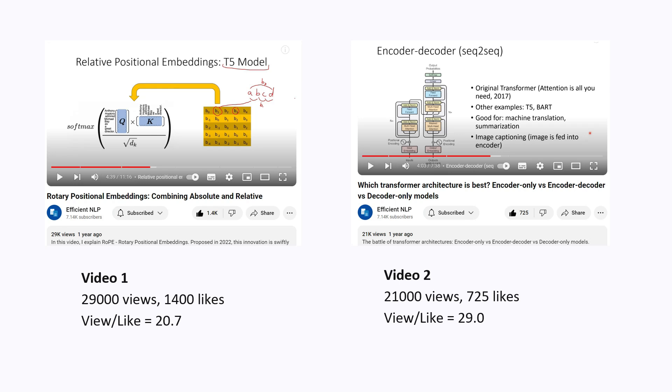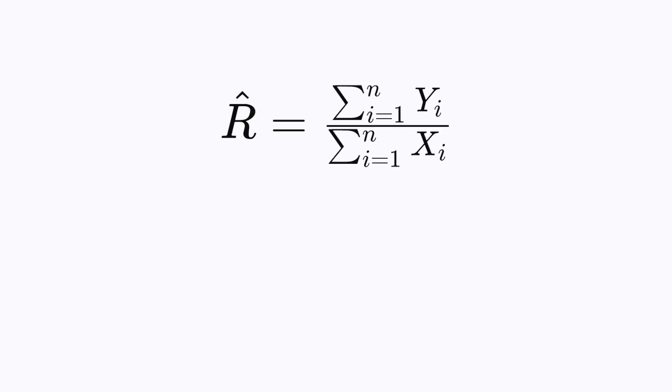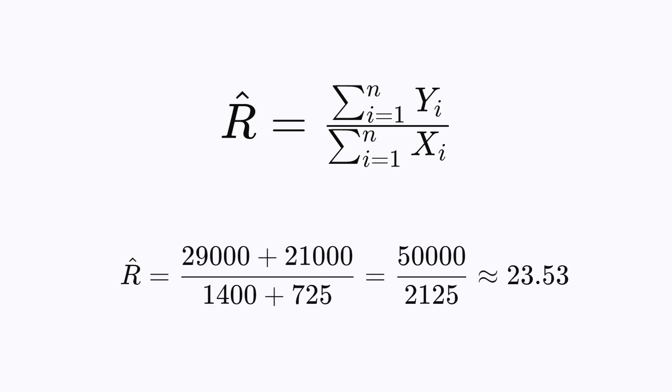I would like to know the view-to-like ratio across my whole channel, but it's time-consuming because I have to go into each video to know how many views and likes I have. Instead of doing all this manual work, I'm going to use a ratio estimator to get an approximation of my view-to-like ratio across my whole channel. In this case, from the two of my videos that I sampled, I can approximate the view-to-like ratio in my channel as 23.53.